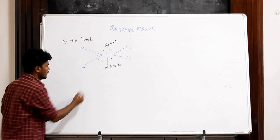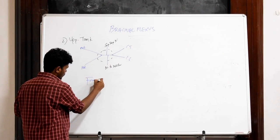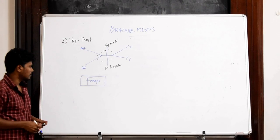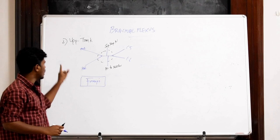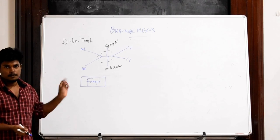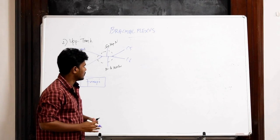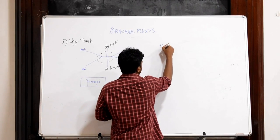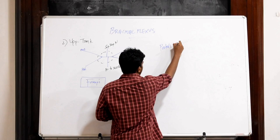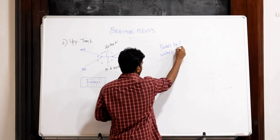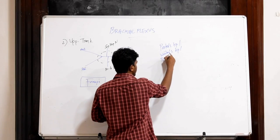In forceps delivery, when the baby is taken out using forceps, there is damage to the upper trunk of brachial plexus and we have a clinical feature which is known as porter's tip or waiter's tip or policeman tip.